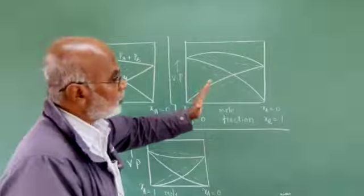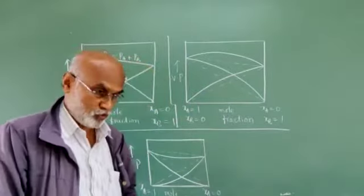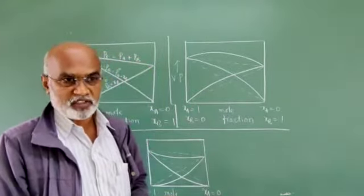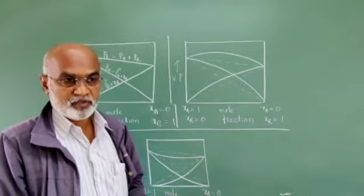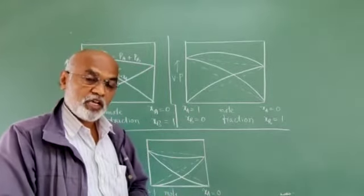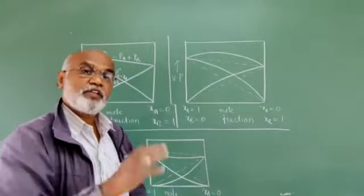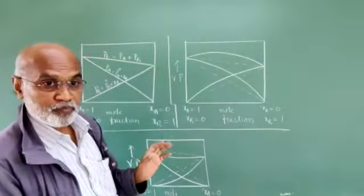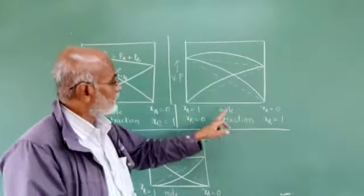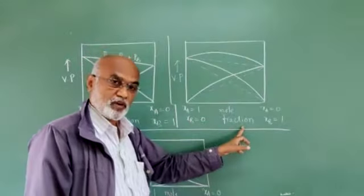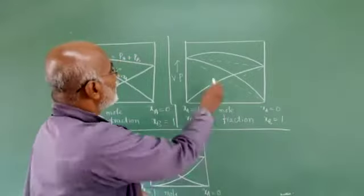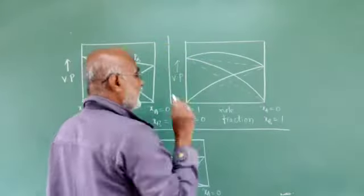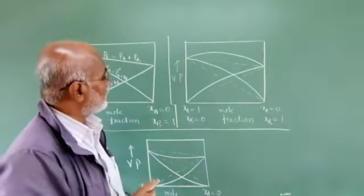Now coming to a non-ideal solution which does not obey Raoult's Law at all temperatures and concentrations. In case it shows a positive deviation from Raoult's Law, when we plot a graph of vapor pressure versus mole fraction, remember the dotted line represents the expected vapor pressure according to Raoult's Law.